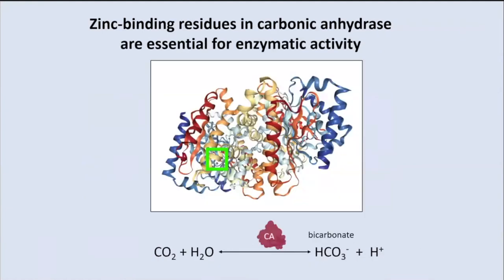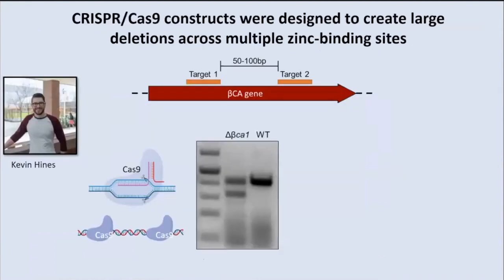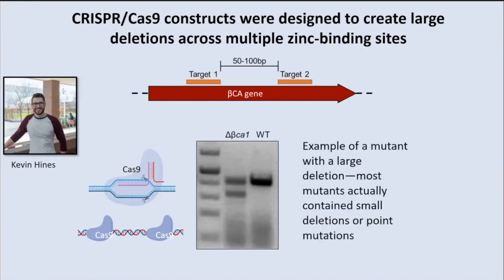There are zinc binding residues in carbonic anhydrase known to be essential for enzymatic activity. Kevin Hines used CRISPR-Cas9 to knock out the carbonic anhydrase genes in tobacco that make proteins targeted to the chloroplast. He designed constructs with two targets to get a clean deletion — here's an example of such a deletion — however, this was the exception, as the approach mostly yielded small deletions or point mutations. Nevertheless, we were able to mutagenize the two chloroplast carbonic anhydrase genes.